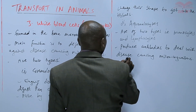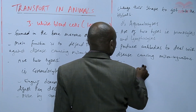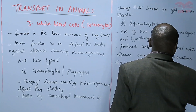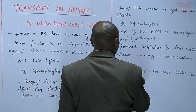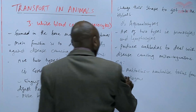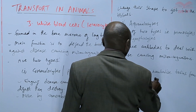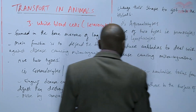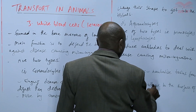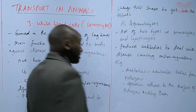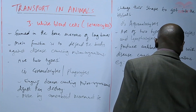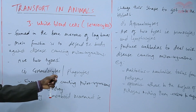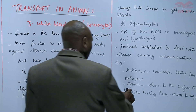For example, they may produce antibodies called antitoxins that neutralize toxins from pathogens. They may also produce other antibodies called opsonins that adhere to the surface of pathogens, making it easier for the phagocytes to engulf the disease-causing microorganisms.